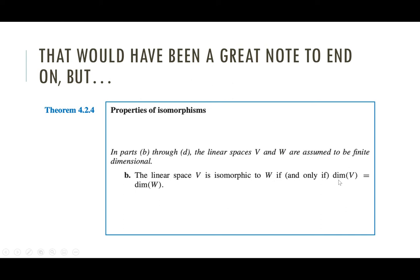One direction is somewhat expected — if V and W are isomorphic, have the same structure, and are basically carrying the same information in a different format, then they better have the same dimension. The surprising direction is that if two vector spaces have the same dimension, then they are isomorphic. Any two finite dimensional vector spaces with the same dimension are isomorphic — that is very surprising, and that's the big idea to blow your mind in this section.